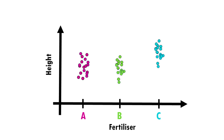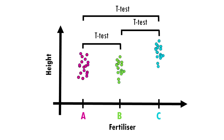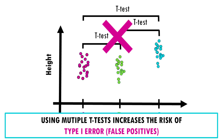If we wanted to compare fertilizers A and B, we could use a standard t-test to compare their means. However, when we have more than two groups, we would need to make pairwise comparisons between each combination of the groups. Using multiple t-tests increases the risk of type 1 error, so false positives — the probability of concluding that there is a difference between fertilizers when in fact there isn't increases.